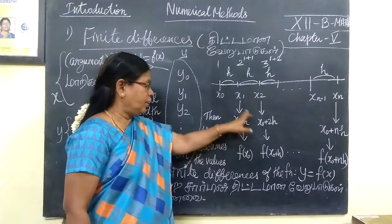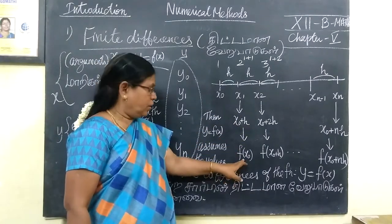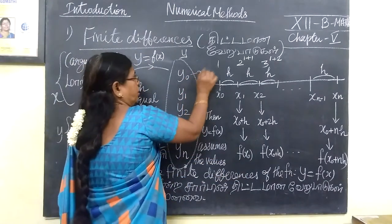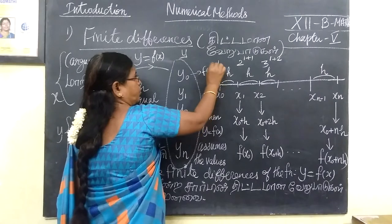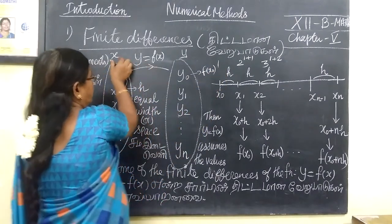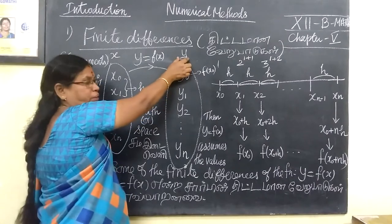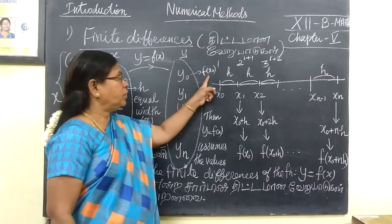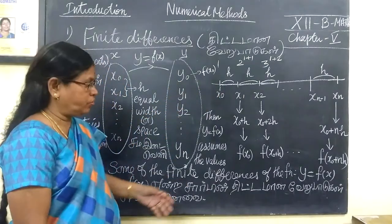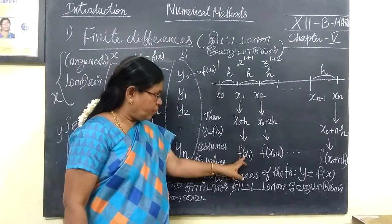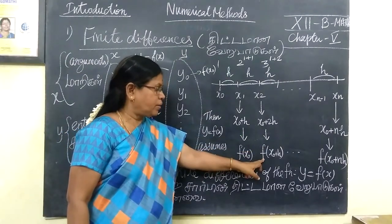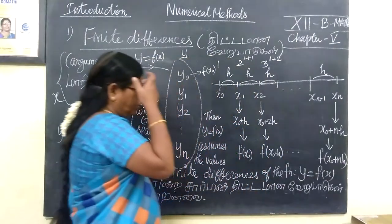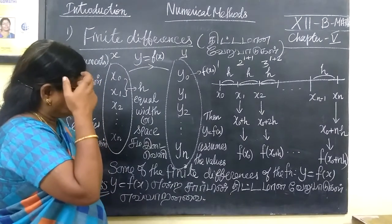This x₀ is x₀. Function is x₀, y equal to f of x₀. This x₀ is x₀ minus x₀ plus x₀. Y equals x₀, then x₀, x₀ plus nx.